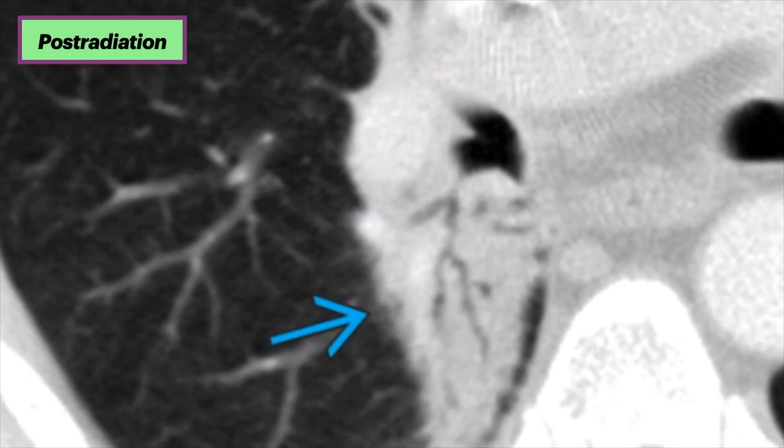We also see atelectasis after radiation. This axial CT in an individual status post radiation therapy for lung cancer shows cicatricial atelectasis affecting the superior segment of the right lower lobe and the medial segment of the middle lobe.